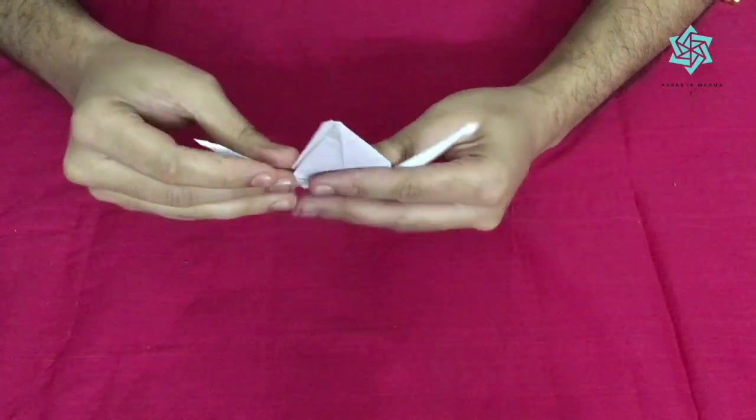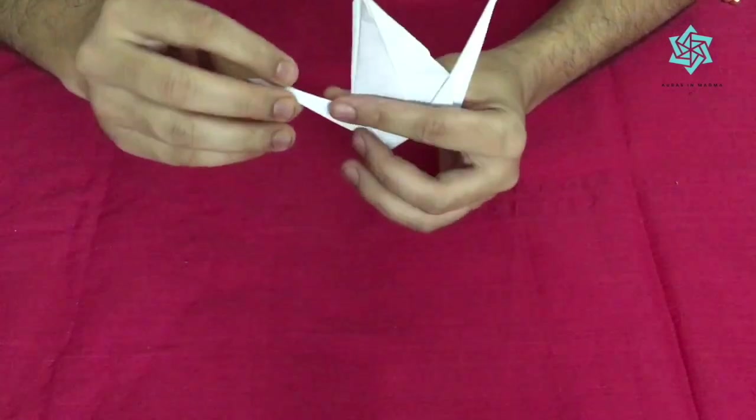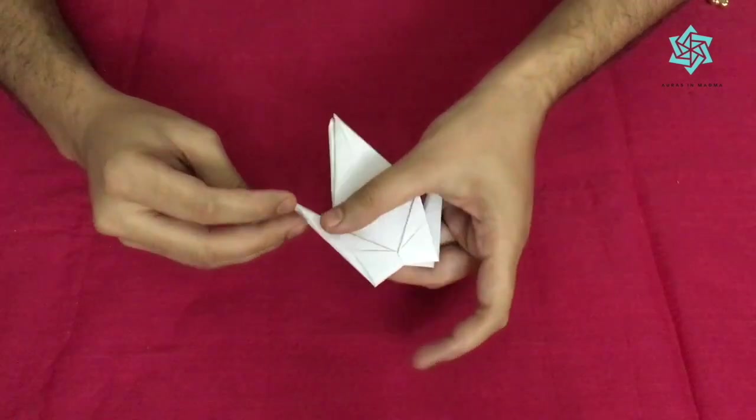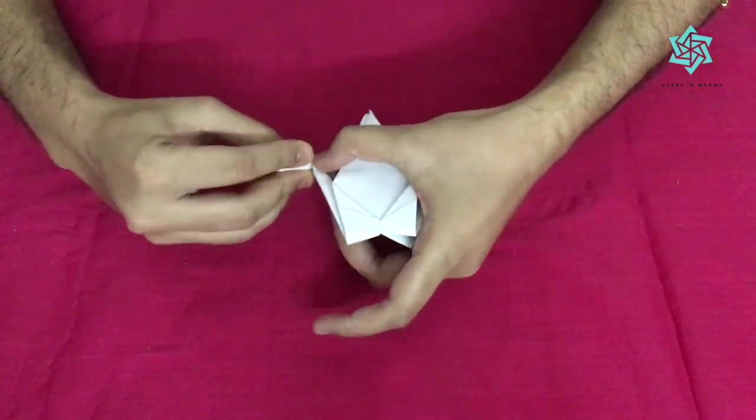But right now both of them look like a tail. So how do we make a head? We take one of these and we pinch it on the inside like this.